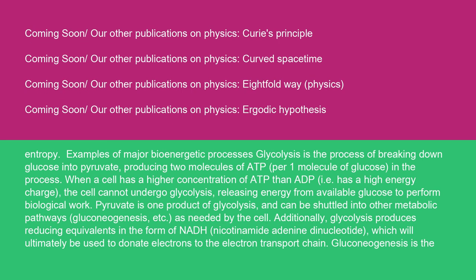Examples of major bioenergetic processes: glycolysis is the process of breaking down glucose into pyruvate, producing two molecules of ADP per one molecule of glucose in the process. When a cell has a higher concentration of ADP than ADP — i.e., has a high energy charge — the cell cannot undergo glycolysis, releasing energy from available glucose to perform biological work. Pyruvate is one product of glycolysis and can be shuttled into other metabolic pathways. Additionally, glycolysis produces reducing equivalents in the form of NADH (nicotinamide adenine dinucleotide), which will ultimately be used to donate electrons to the electron transport chain.